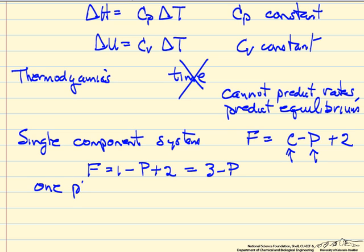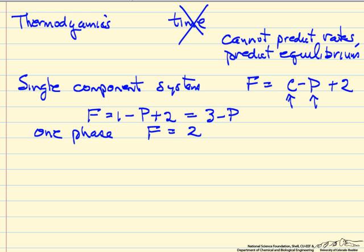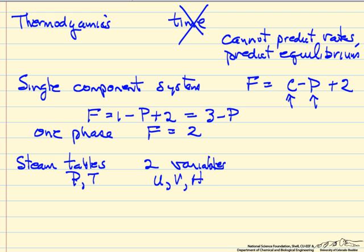So if we have one phase, we have to have at least one phase, then we have two degrees of freedom. What that means, and we'll think about this in terms of the steam tables to make it easier to visualize, if we're given two variables, then this means everything else is determined. So if you know the pressure and the temperature, then everything else is fixed. The internal energy, the volume, the enthalpy, the Gibbs free energy, etc.